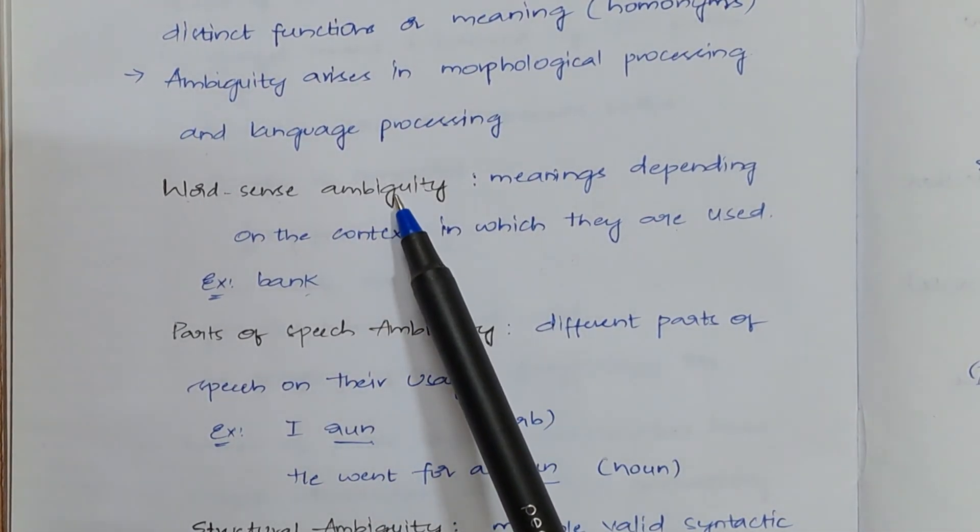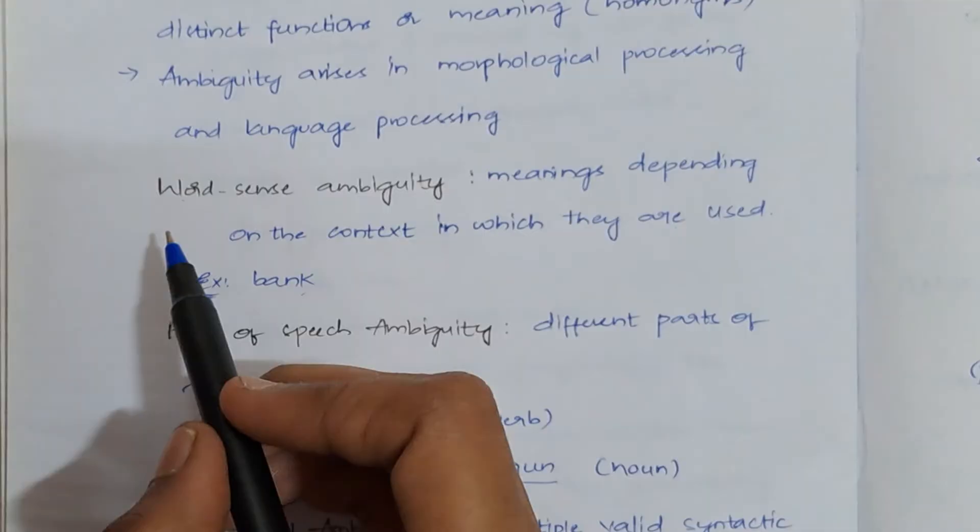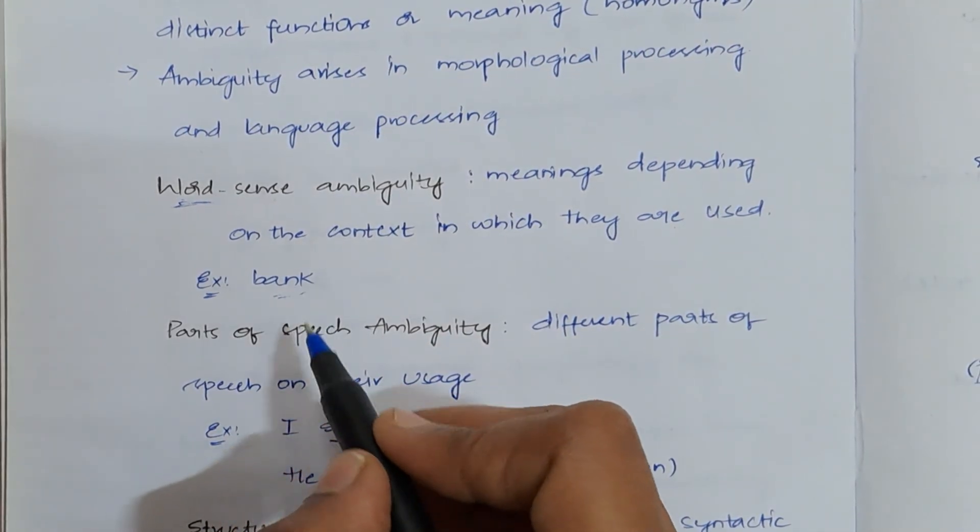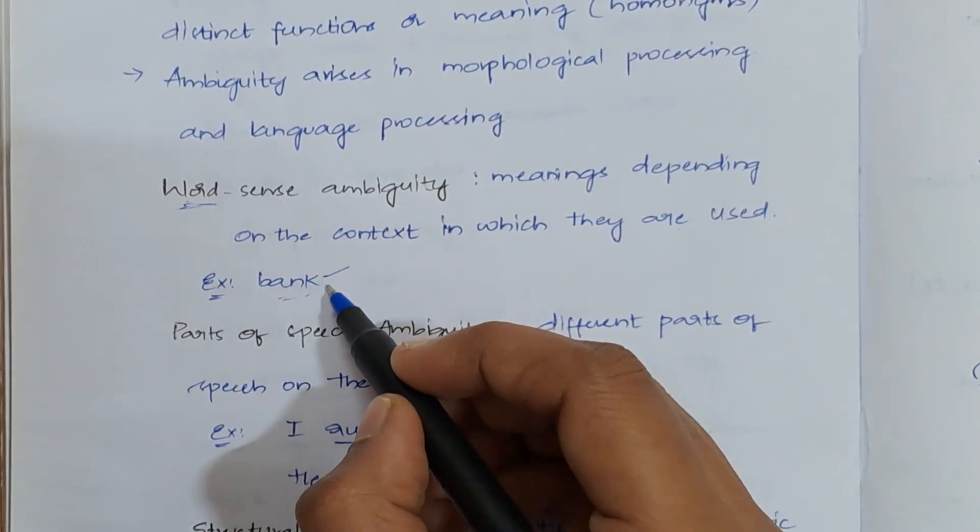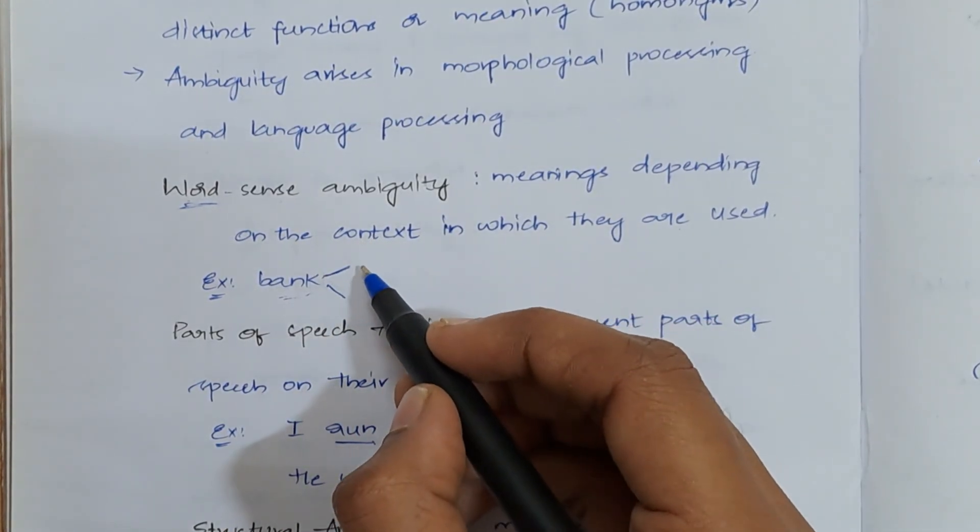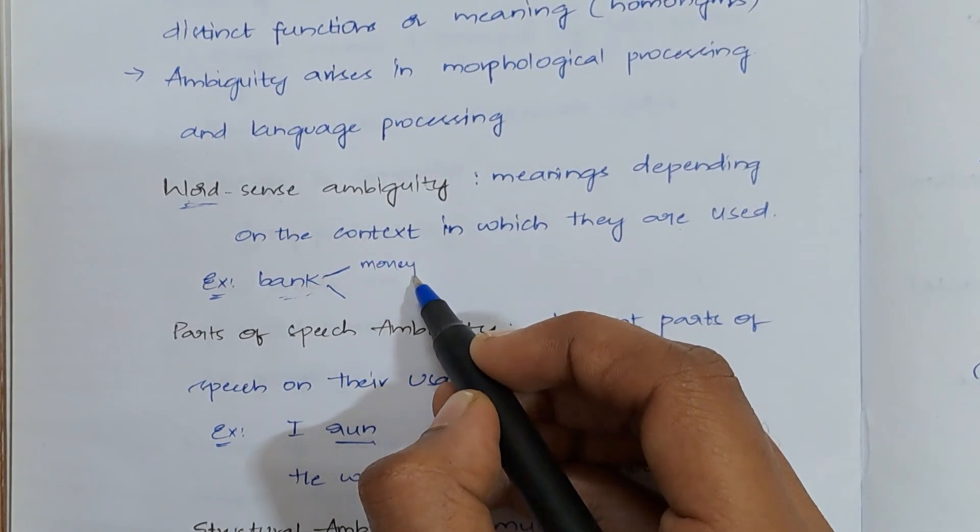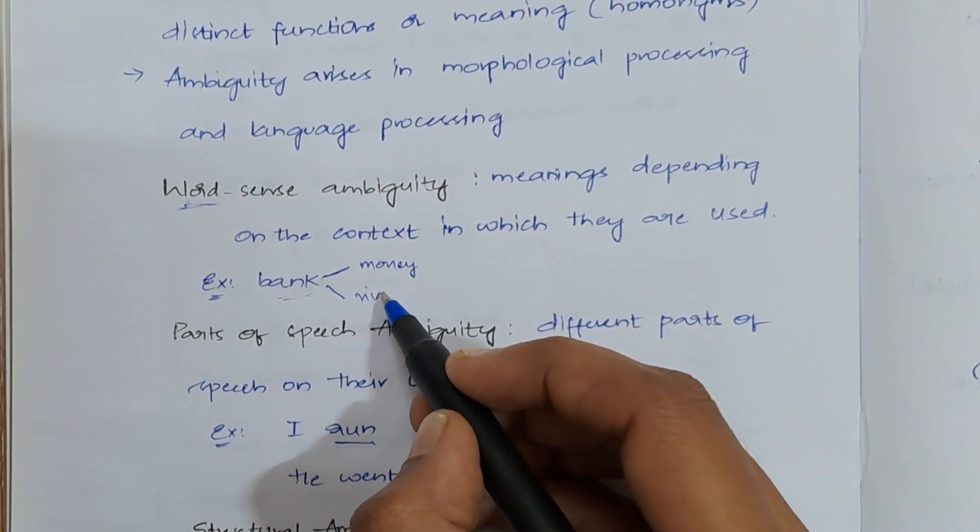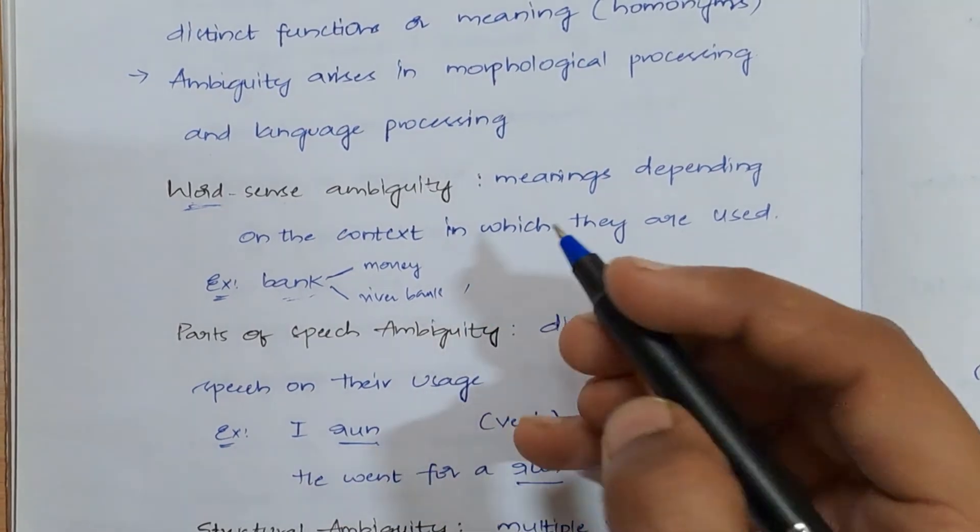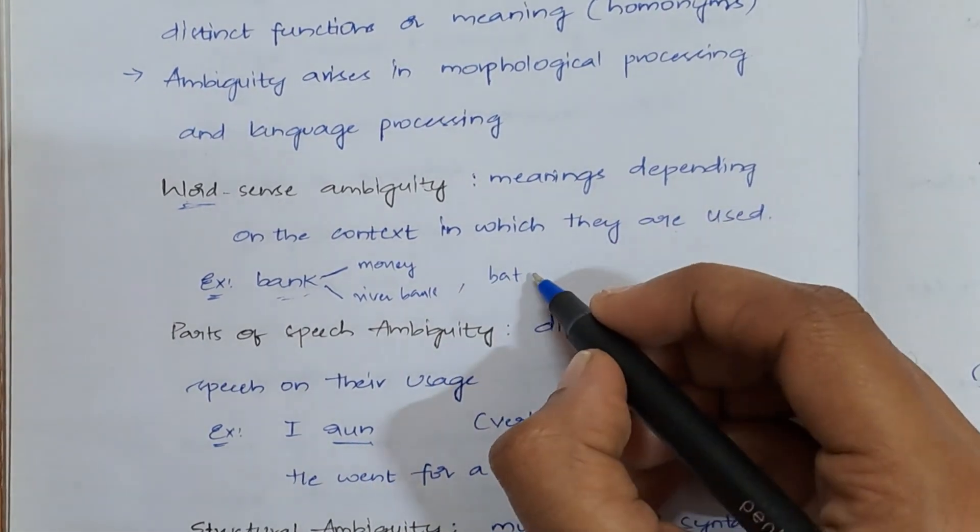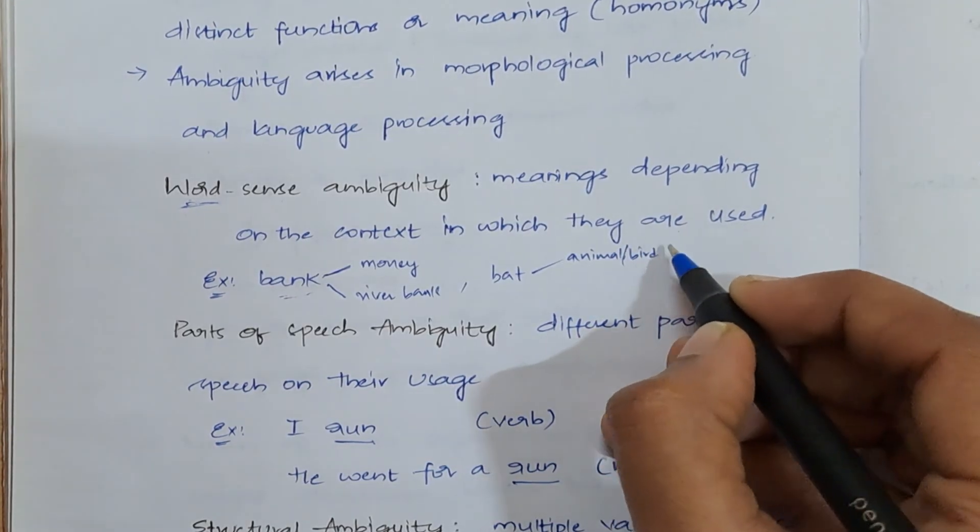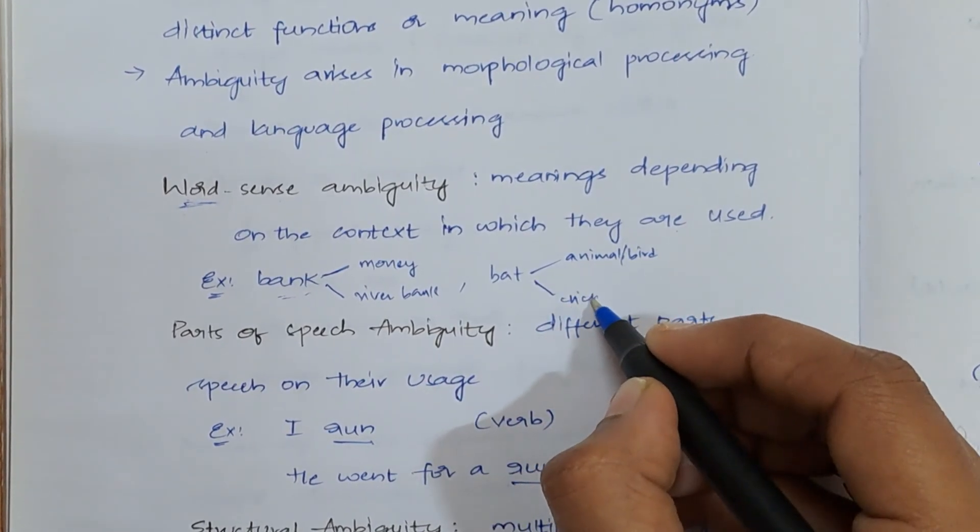The first one is word sense ambiguity. What is meant by word sense ambiguity? A particular word will be having different kinds of meanings. Let's take bank as an example. Bank will be having two different meanings. First one, banks come under money. And then, other bank is river bank. Another example is bat. When you take bat, there will be two kinds of examples. Bat means it comes under animal, a bird, right? And then another bat is nothing but cricket bat.